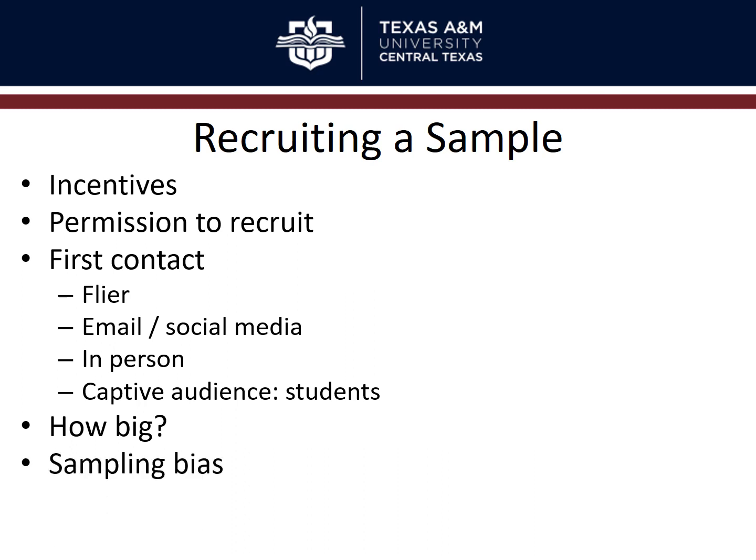Finally, sampling bias can creep in in a couple of ways, and sampling bias refers to systematic differences between your sample and the population of interest.